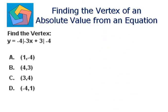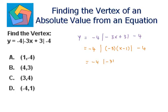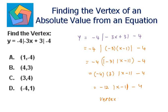Next problem. Find the vertex: y equals minus 4 times absolute of minus 3x plus 3, minus 4. Let's take minus 3 common inside the absolute: minus 4 times absolute of minus 3 times the quantity x minus 1, minus 4. Absolute of minus 3 is 3 only, so this becomes minus 4 times 3, giving minus 12 times absolute of x minus 1, minus 4. So the vertex becomes 1, comma minus 4, which is the answer in part A.